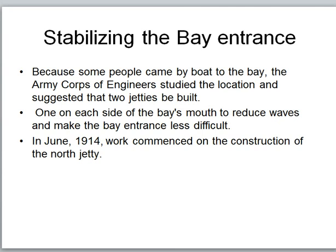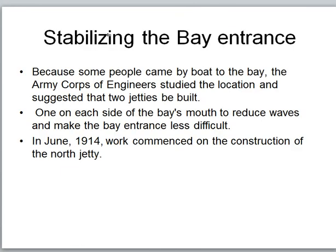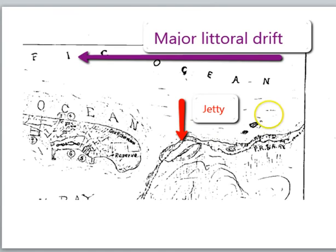What they proposed was to put a jetty on either side of the bay entrance — one jetty here and one jetty here. That way the waves coming from this direction would not make the bay entrance so rough because they would be caught by the jetty. They levied taxes on the people living there to help pay for that jetty, and began work on it in 1914. This would also help stabilize the highway. Major drift along the coast is from north to south.